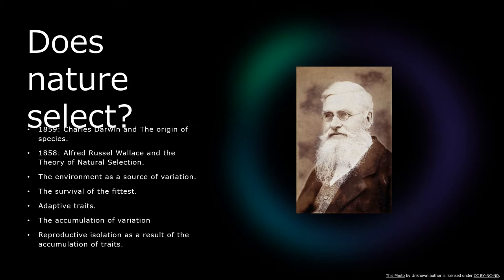Charles Darwin proposed the origin of species, and not everyone agrees with him — even till today there has been controversy regarding theories of evolution. He had a colleague called Alfred Russel Wallace, who proposed the theory of natural selection. Wallace proposed a line passing through the Indonesian archipelago — on the Australian side the species are distinct, while on the other side they are more related to Asian origin. Wallace travelled across Southeast Asia and proposed this theory, arguing that the environment was a source of variation and that different climatic regimes led to the origin of new species.